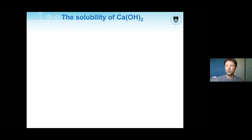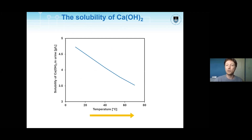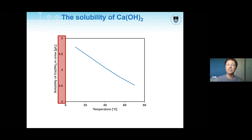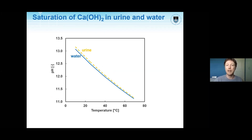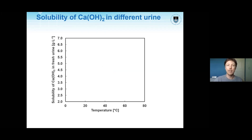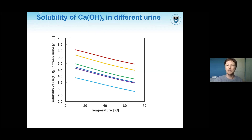When we look at the solubility of calcium hydroxide, we see something different — as temperature increases, its solubility actually decreases, which is called inverse solubility. The amount needed to create a saturated solution is far less than that for sugar. When we compare this in urine versus water, despite very different compositions, the pH when adding calcium hydroxide is pretty much the same as a function of temperature. We recommend a dosage of 10 grams of calcium hydroxide per liter of urine.